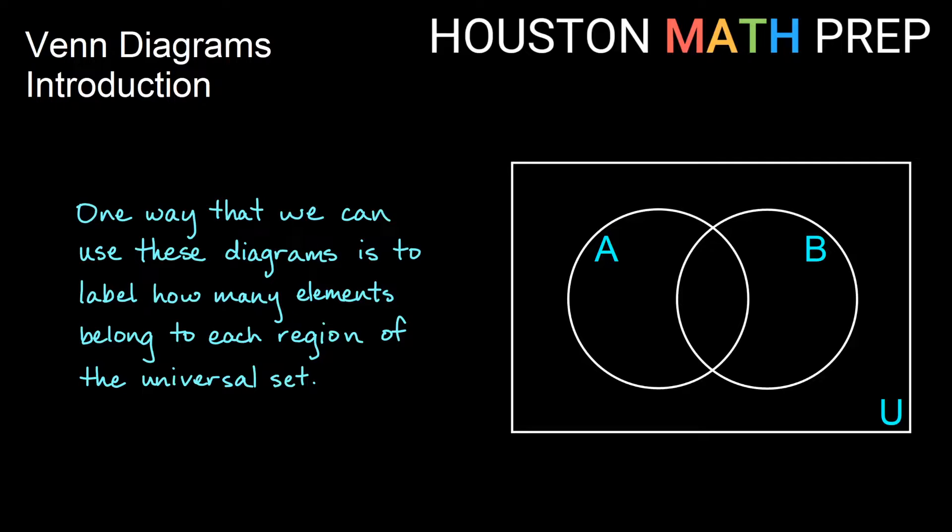One of the ways that we can use Venn Diagrams is to actually label how many elements belong to each region of my diagram here. So you notice I have four regions. I have a region in the middle here, I have a region over here where it says A, I have a region over here where it says B, and then I also have this region outside of the circles as well.